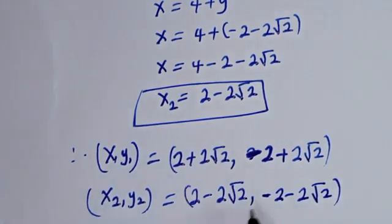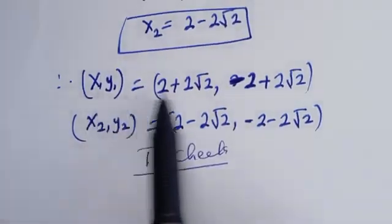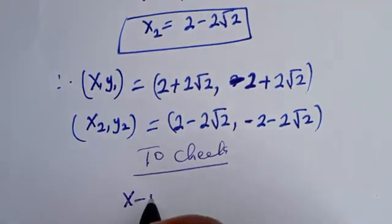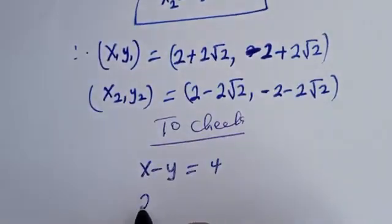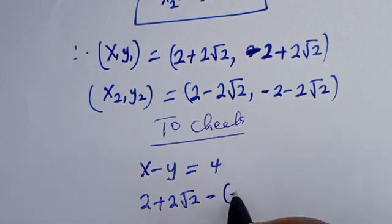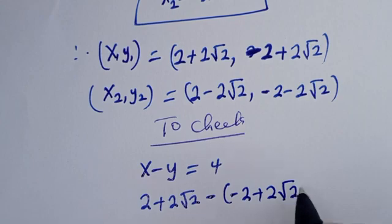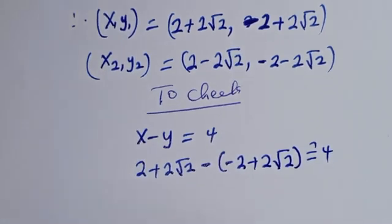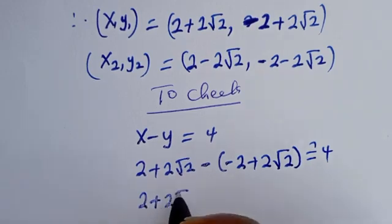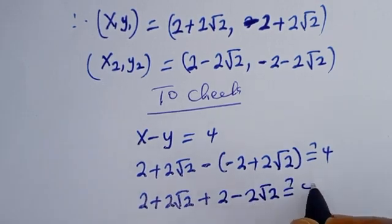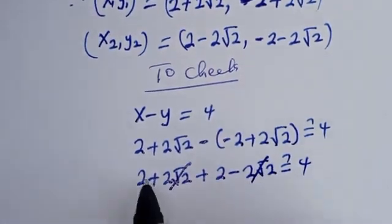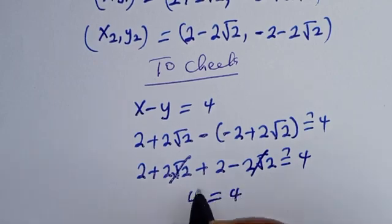We can check to confirm if this answer is right. Let's check using equation 1: x minus y is equal to 4. Substituting x1 and y1: (2 plus 2 root 2) minus (minus 2 plus 2 root 2) equals 2 plus 2 root 2 plus 2 minus 2 root 2. The 2 root 2 terms cancel, leaving 2 plus 2 equals 4. The left-hand side equals the right-hand side — true.